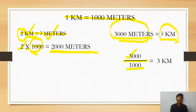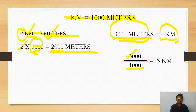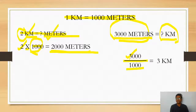I hope you have understood. Let's revise once again. 1 kilometre equals 1000 metres — remember this. If the number is given in kilometres and you are asked to convert to metres, multiply that number by 1000 and you will get the answer in metres. If the number is given in metres and you are asked to convert to kilometres, divide it by 1000. For example, 3000 metres divided by 1000 equals 3 kilometres.